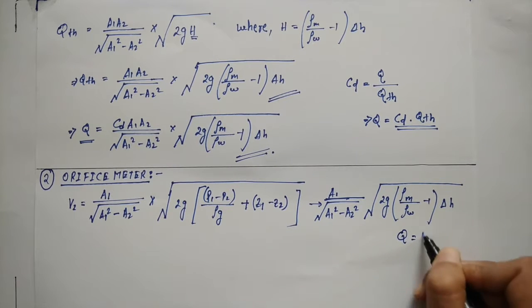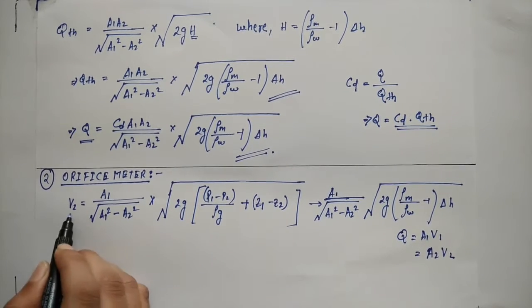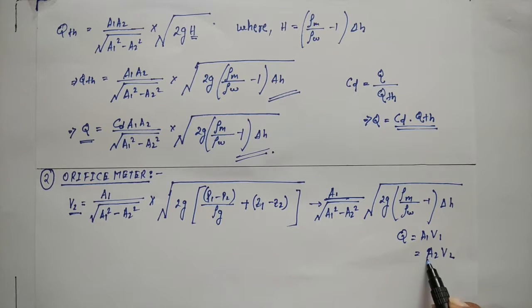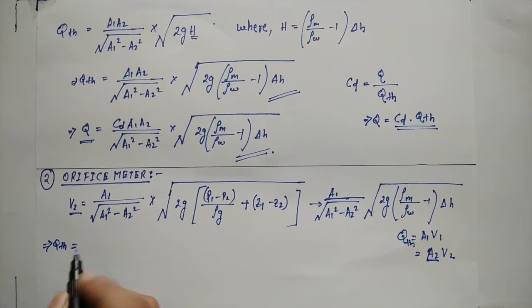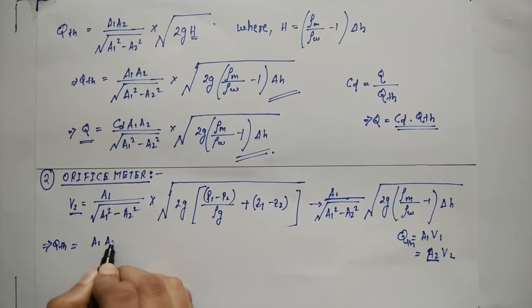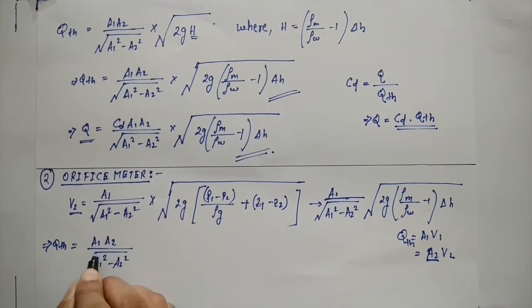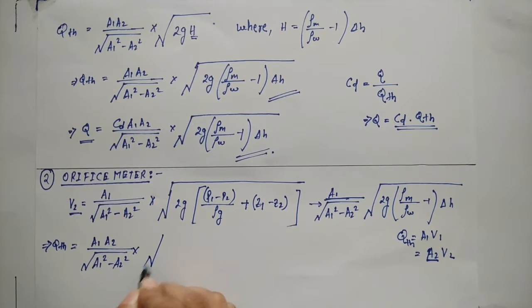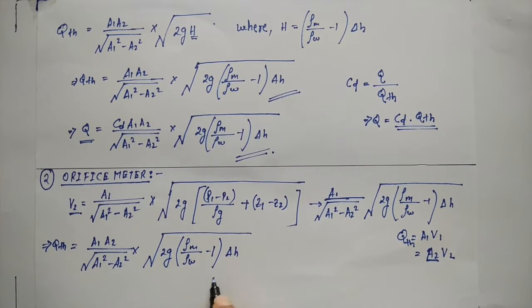So as we all know that Q is equal to a₁v₁, that is equal to a₂v₂. We have found the value of v₂, and so after multiplying with a₂ we will get Q theoretical. Hence the value of Q theoretical comes out to be a₁ into a₂ by root over a₁ square minus a₂ square into root over 2g.